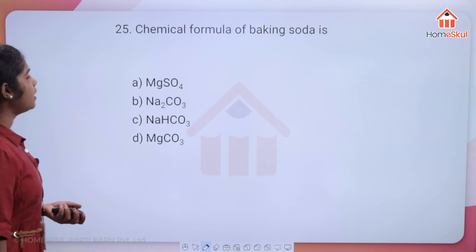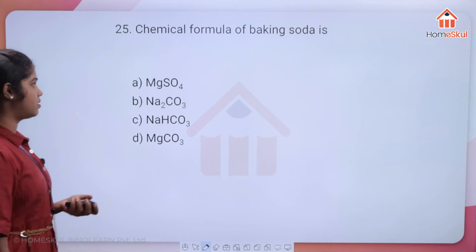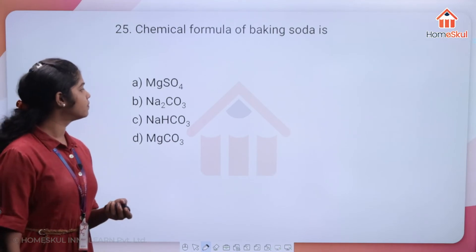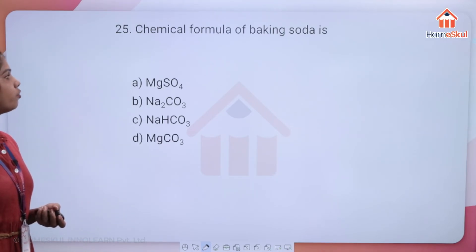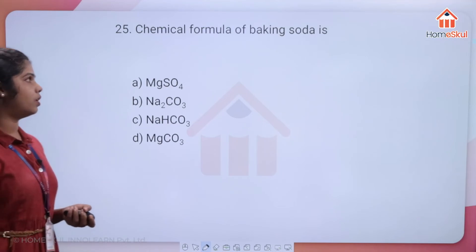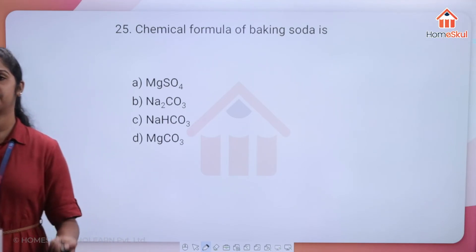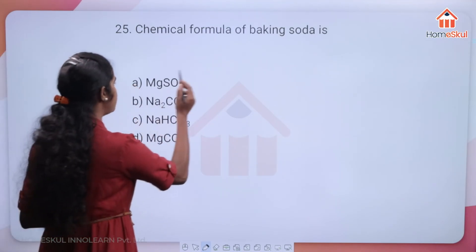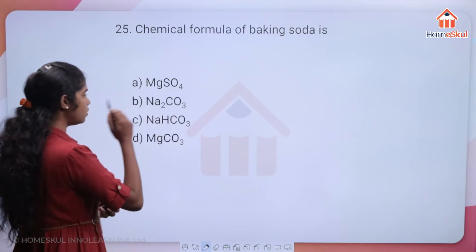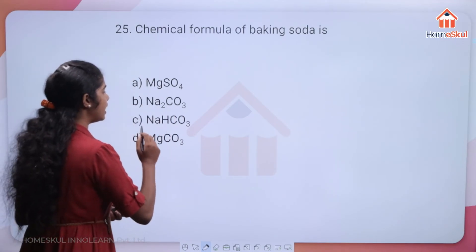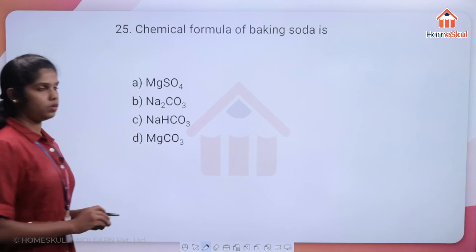Question 25: the chemical formula of baking soda is — MgSO4, Na2CO3, NaHCO3, or MgCO3?